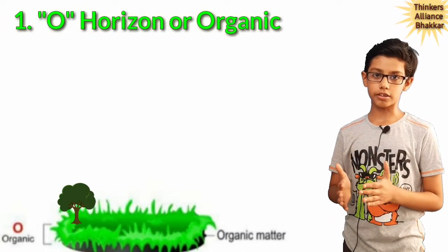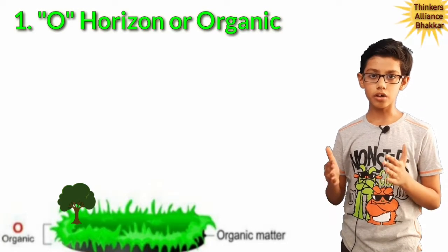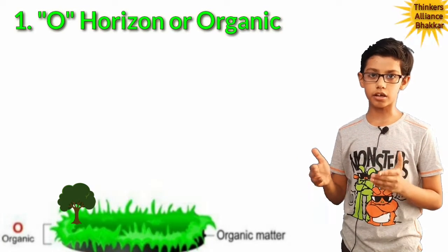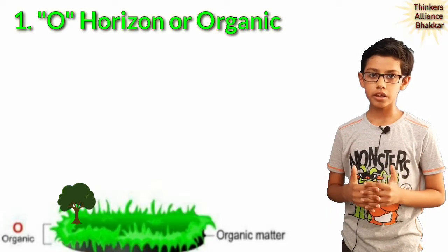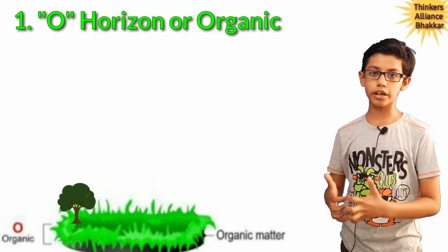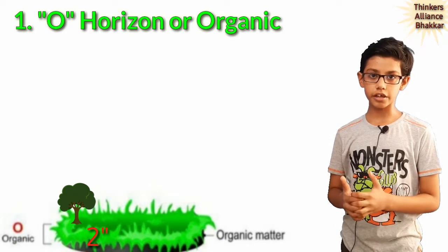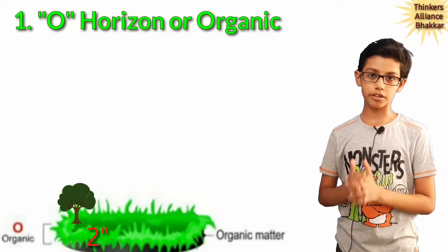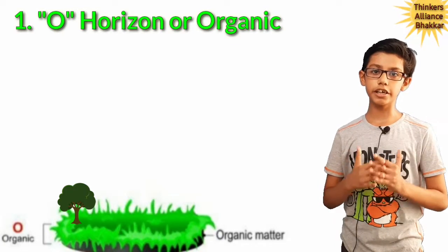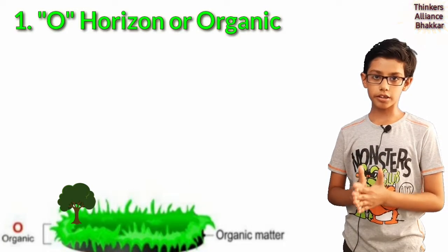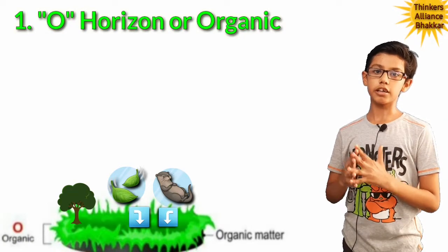Number one, O horizon. O horizon is the top layer of soil and it is the organic matter layer. The O horizon is also known as organic. It is approximately two inches thick. Sometimes the O horizon is thick or thin or completely absent. O horizon is made up of living organisms and decomposed materials.